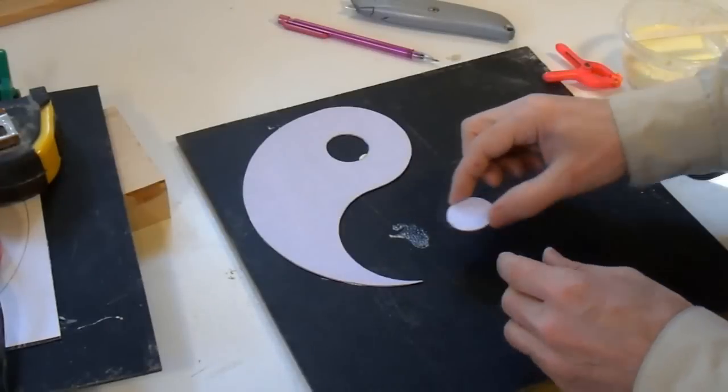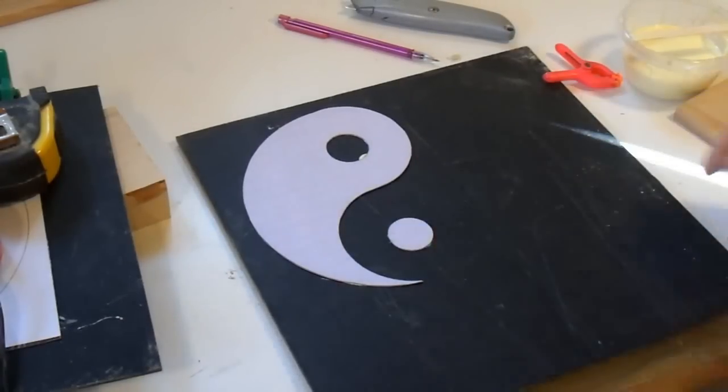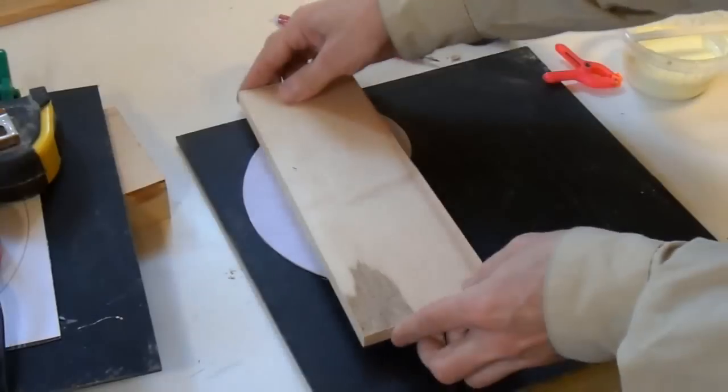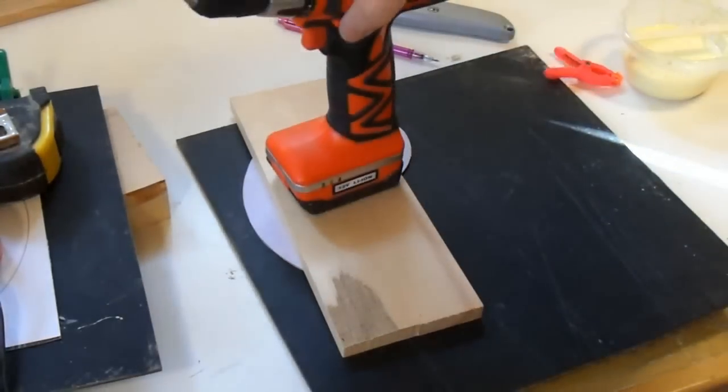I'm using the part that I cut out of my positive template to make another negative template, which I'll later use to shape the part that I'll actually inlay into the cavity that I'm going to carve.